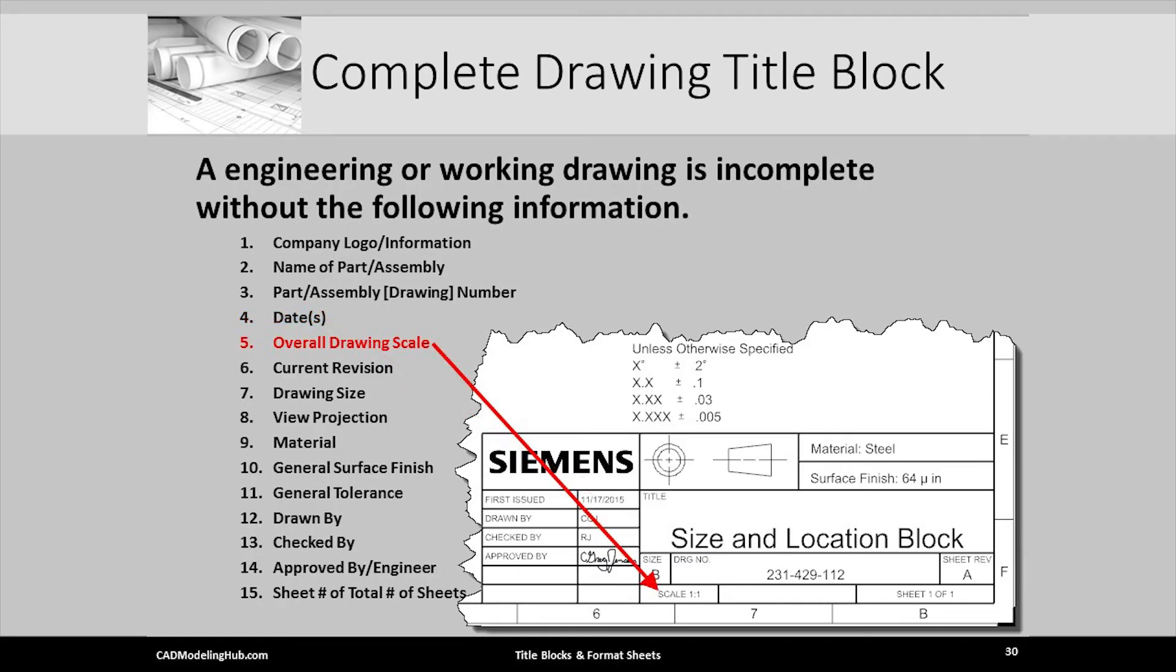This is the scale cell and it indicates the size or scale of the base view. Siemens fills this cell in automatically.